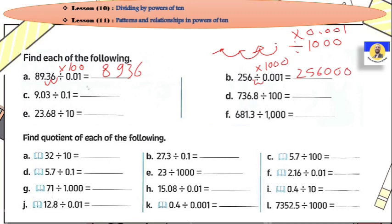The next: divide by 0.1. هي هي كأنها بتعمل multiply by ten. يبقى move one digit to the right. So you have 90.3.